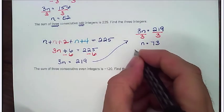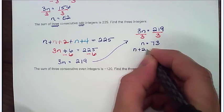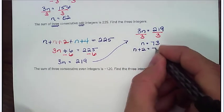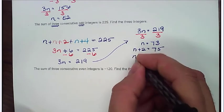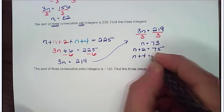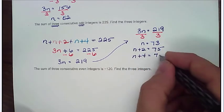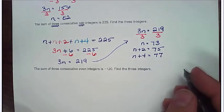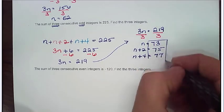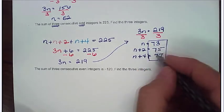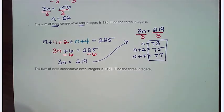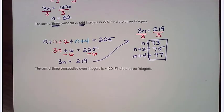Now, I need n plus 2. So n plus 2 is my second number. That's going to be 75. And then n plus 4 is going to give me 77. Note that these are three consecutive odd integers. If you had come up with an even integer in this list, it would have been incorrect. So that's the sum of three consecutive odd integers.